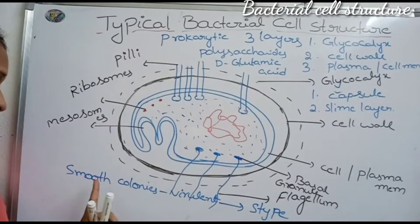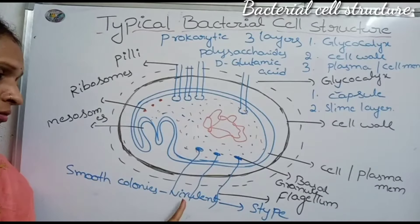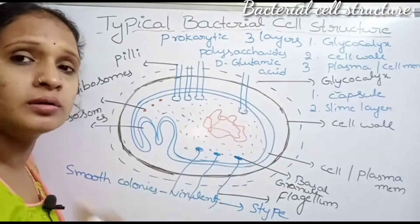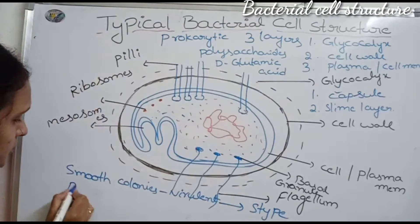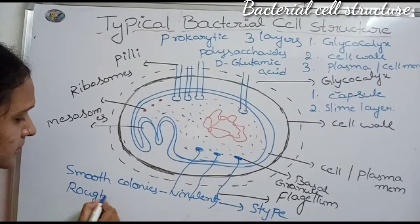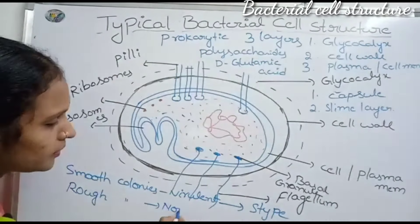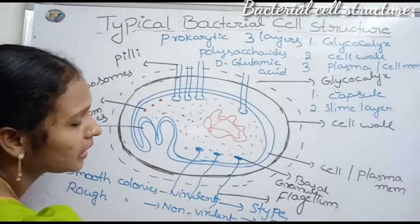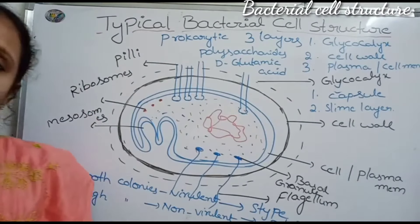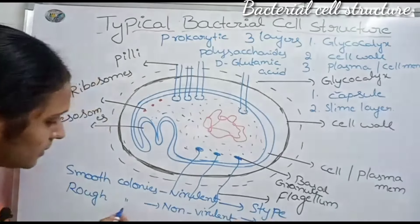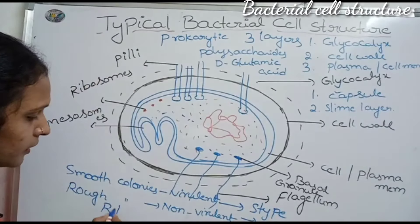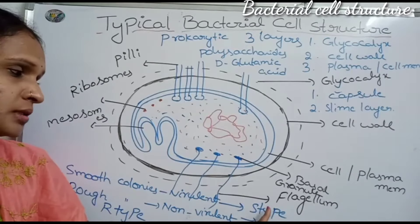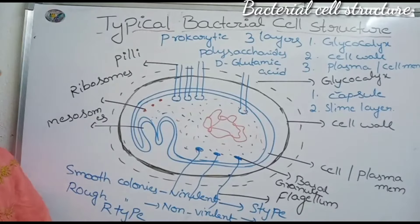S-type bacteria are capsulated bacteria and are virulent. Some bacteria do not produce any capsules — these are non-capsulated bacteria, which produce rough colonies and are non-virulent. This type is called R-type bacteria. So R-type bacteria is non-virulent and S-type bacteria is virulent, releasing toxins.